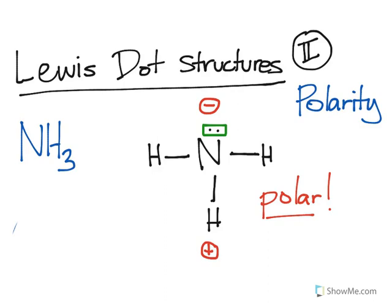Now, depending on your instructor, you may actually have them have you write the delta sign like this with a negative sign and the delta sign with a positive sign. That just means a slightly negative and slightly positive charge on those ends of the molecule. But it's sufficient in my class to go ahead and just put the positive and negative signs on the molecule, and that would be enough.